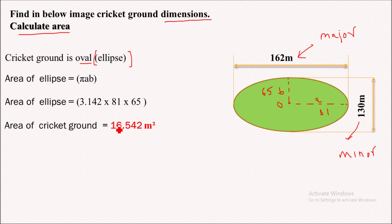So area of ellipse is pi AB. Now how is it? We know that the area of circle is pi R square.